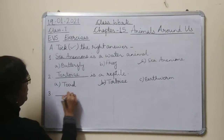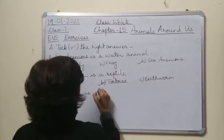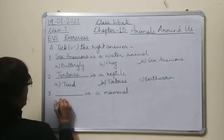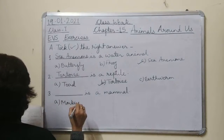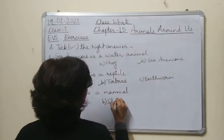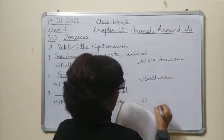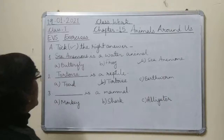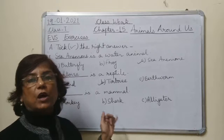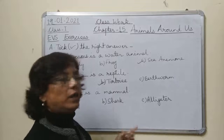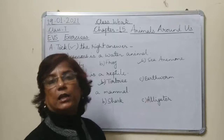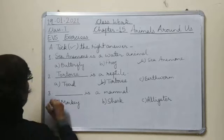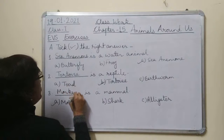Third question: which is a mammal? The options are a) monkey, b) shark, and c) alligator. Monkey is a mammal. Shark is a fish — out of fish, only whale and dolphins are mammals. Alligator also lays eggs, then baby alligators come out. So the correct option is a — monkey is a mammal.